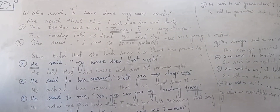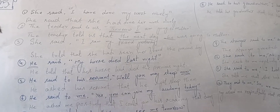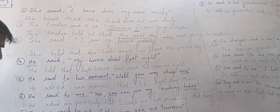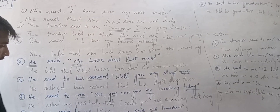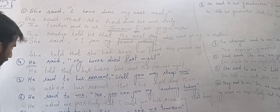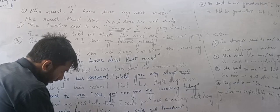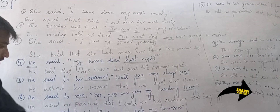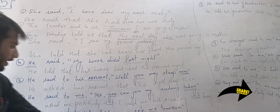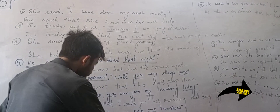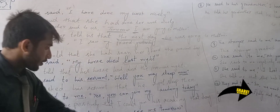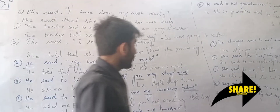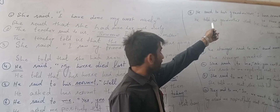The boy said to us: 'You can see me tomorrow.' The boy told us that we could see him the next day. 'You' as object changes, and 'tomorrow' changes to 'the next day.'